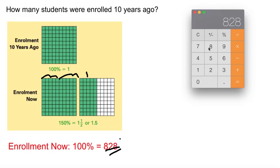828 is your new enrollment from enrollment from this year. But 10 years ago, it was 150%. Well, it's 150% now. So what is it 10 years ago? So let's take a look. So if we divide these by 3.